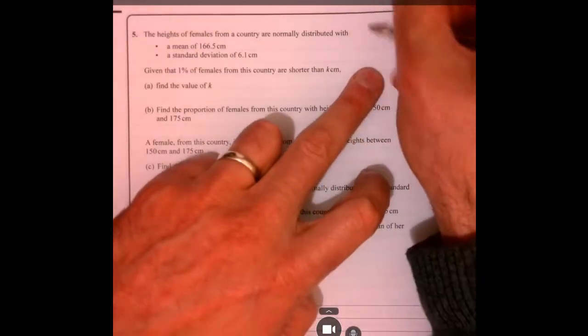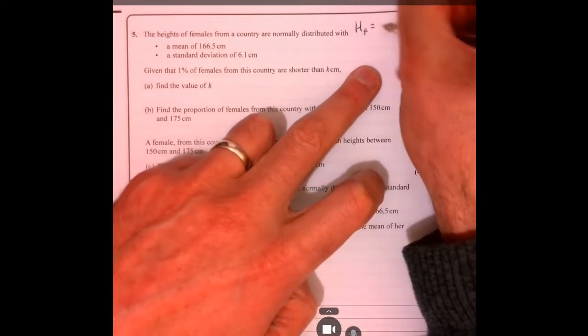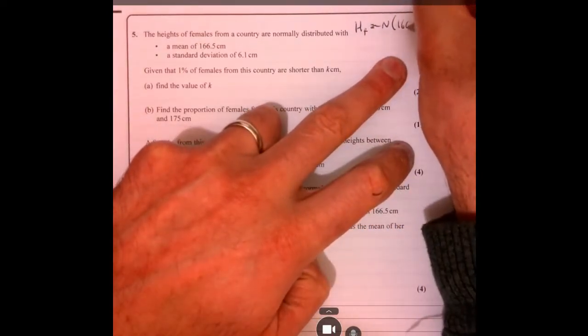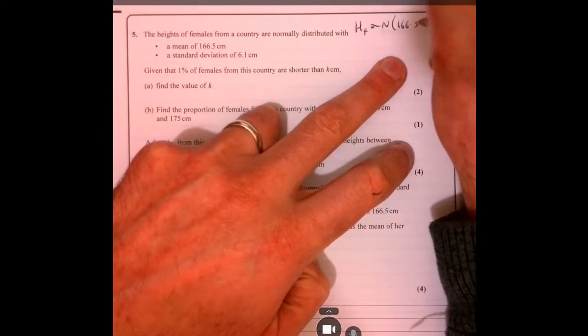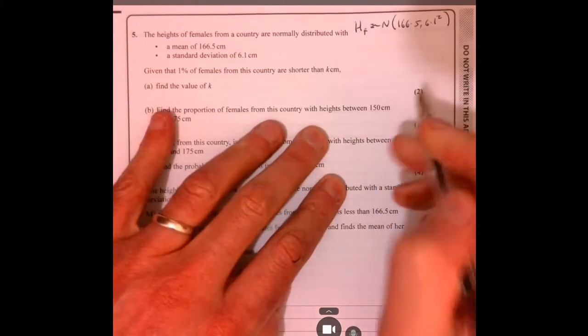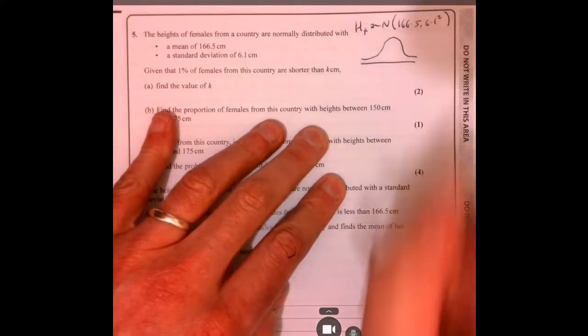Question 5. Let's summarize what we've got. We're told the heights of some females is normally distributed. 166.5 is the mean, standard deviation is 6.1. So we write the variance just there. Always helpful to draw lots of diagrams when you're doing this.